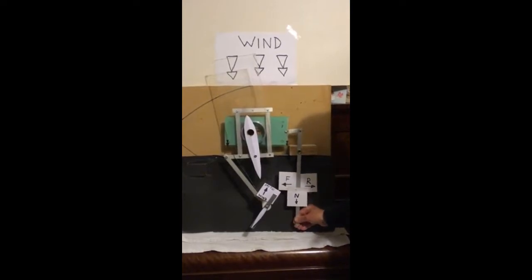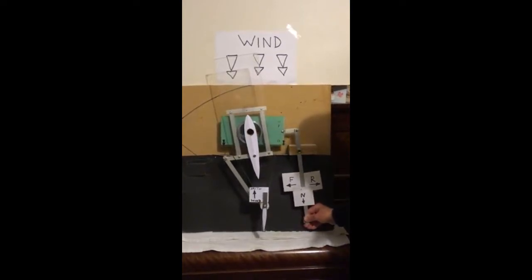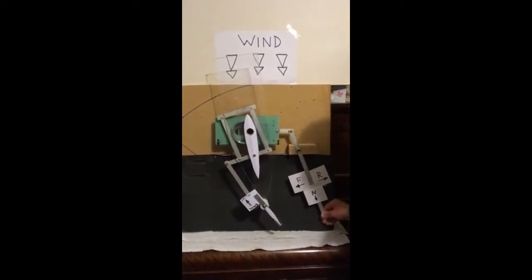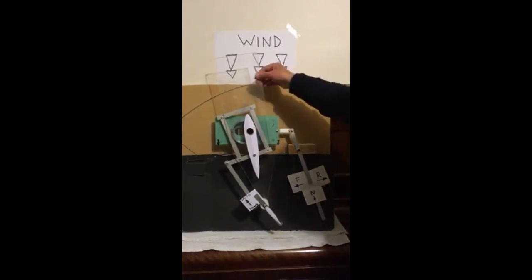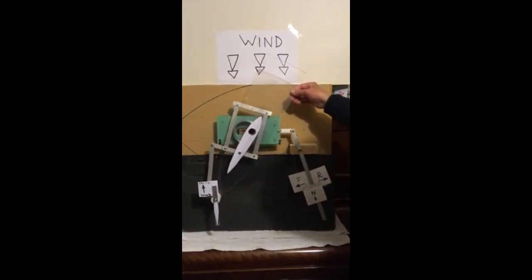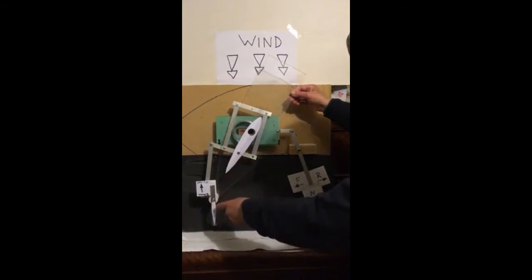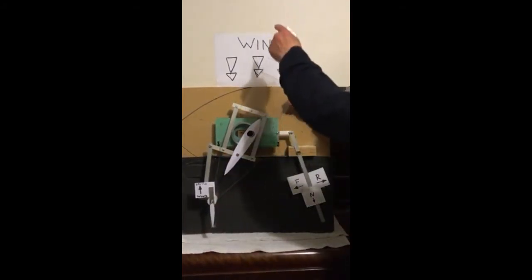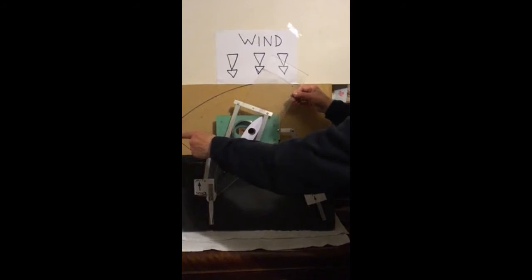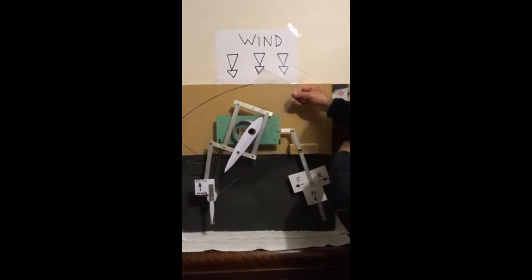Now we go neutral, now we go reverse. Here the vein again points into the wind. The wing comes here, hits the wing, which goes that way, and the boat goes into reverse.